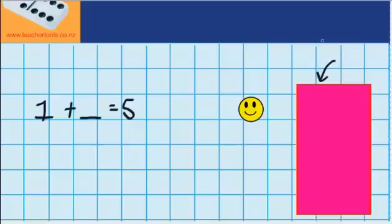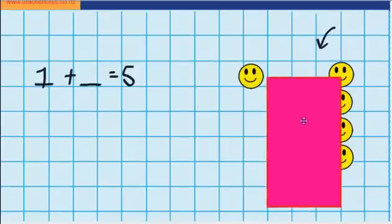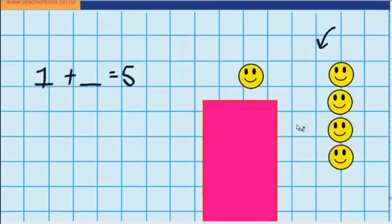Well, let's move the rectangle and find out if you were right. And you can see that under here I've got four more smiley faces. So, 1 plus 4 equals 5.